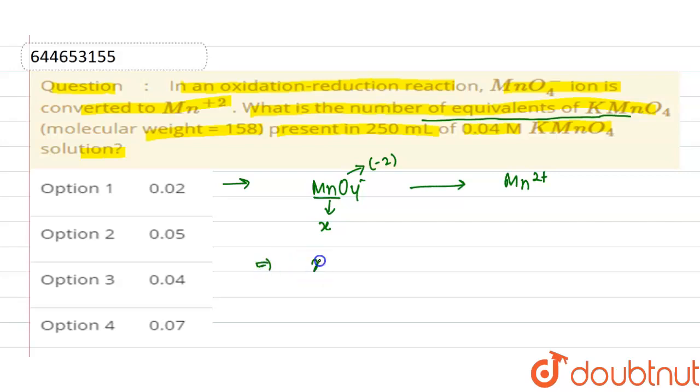So it will be x + (-2) × 4, because there are 4 moles of oxygen, equals -1 (the overall charge). So x - 8 = -1.